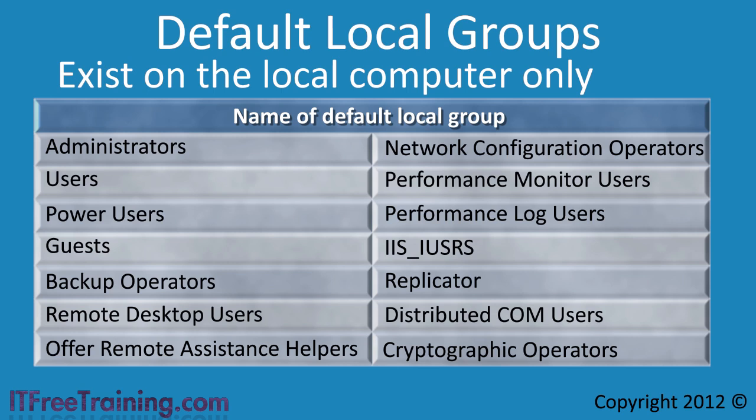In this video I will go through each of these groups, and at the end I will show how to use them in Windows 7. You can click a link to jump to a specific group. On your computer you may have additional groups not listed here, since installing additional services and software may create additional local groups. Since local groups are local to that computer only, an administrator will often put a domain group into these local groups for centralized administration.